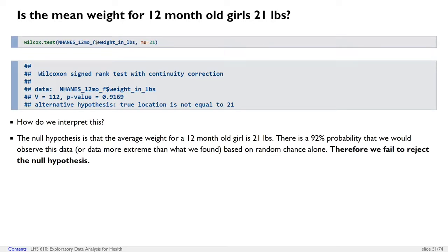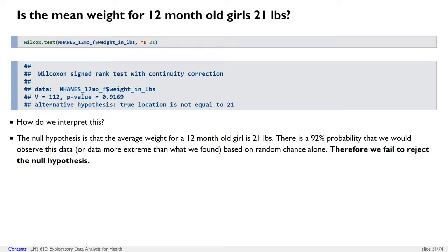We don't accept the null hypothesis that 12-month-old girls have a mean weight of 21 pounds — we simply fail to reject it. That's an important double negative: if you accept your null hypothesis based on this test, you're misinterpreting it.